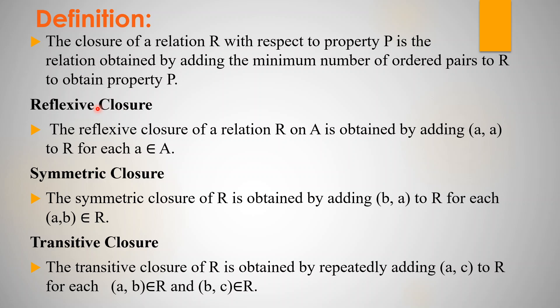There are three types of closures: reflexive closure, symmetric closure, and transitive closure. The Kleene closure is called R star — all combinations including epsilon. If you have A star, it includes epsilon, A, AA, AAA, and so on. We will now see these three types of closures: reflexive closure, symmetric closure, and transitive closure.